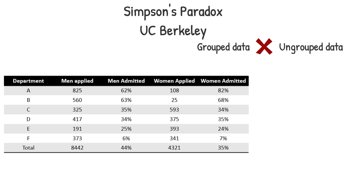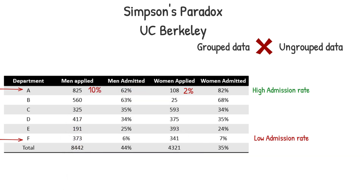Let's take a closer look at the UC Berkeley data, trying to understand the paradox. It's clear that different departments have very different admission rates. For example, Department A has a very high admission rate in comparison to Department F, which has a very low admission rate. For Department A, in spite of the high admission rate, only 2% of all women applied to this department, and 10% of all men applied here.